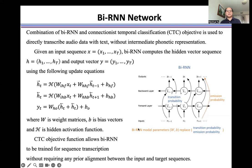CTC objective function allows bidirectional RNN to be trained for sequence transcription without requiring any prior alignment between the input and target sequences.